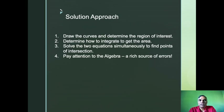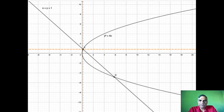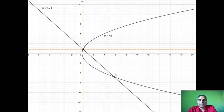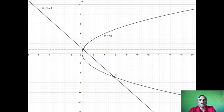Let's draw the curves. y² = 4x is a parabola that opens to the right — to the positive x direction — because for each value of x there are two values of y. It's symmetric around the x-axis. x + y = 1 is a straight line with a negative slope, with intercepts of 1 on either axis: if x = 0 then y = 1, and if y = 0 then x = 1.